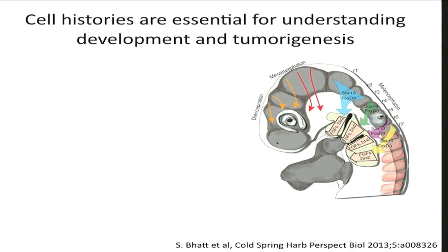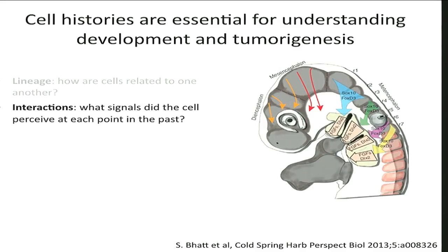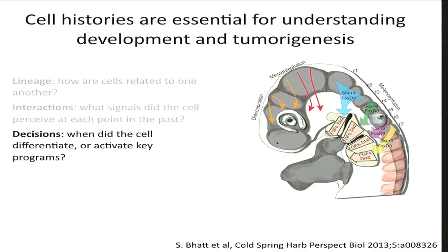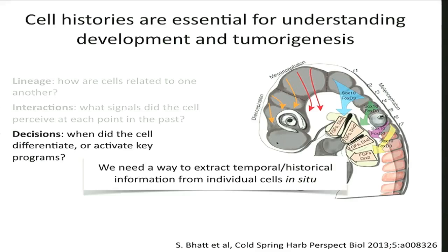When we think about development, we really want to know how each cell got to where it is — what is its own unique history. That means, first of all, when was it born and who is it related to — that's the lineage history. But it also means who did it receive signals from, what kinds of external inputs did it receive, and what decisions did it make at each point in the past. If we could understand these basic histories, we would really be able to understand developmental processes much better.